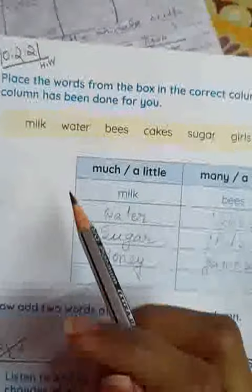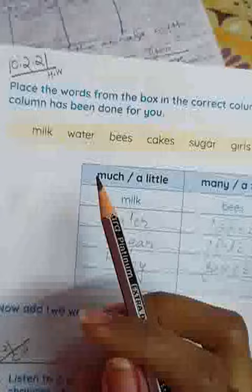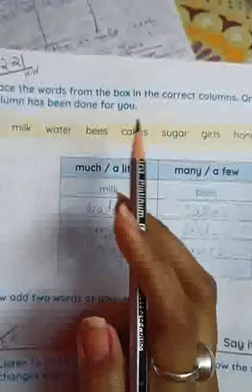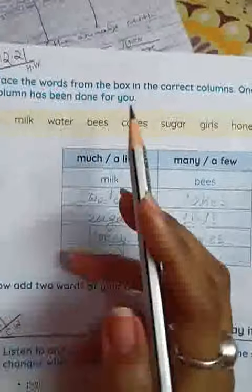Good morning students. Today is 10th February of 2021 and this is the class 2 English homework class. Today's homework is place the words from the box in the correct columns. One in each column has been done for you.